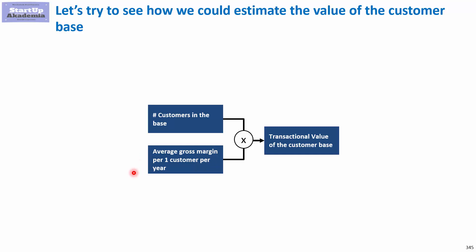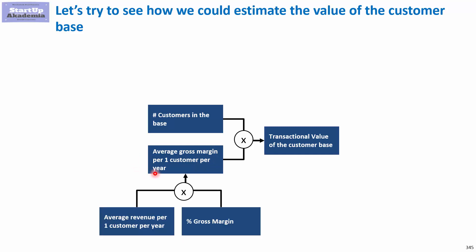The average gross margin per one customer per year we calculate by looking at how much we sell to the customer — the average revenue — and the gross margin we get on the product. When it comes to the number of customers in the base, we will have two things that may change it over the course of the year.